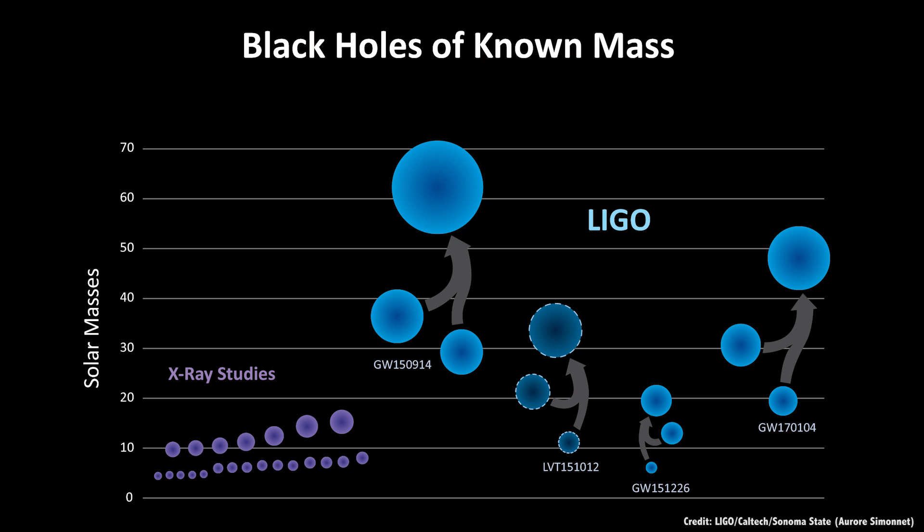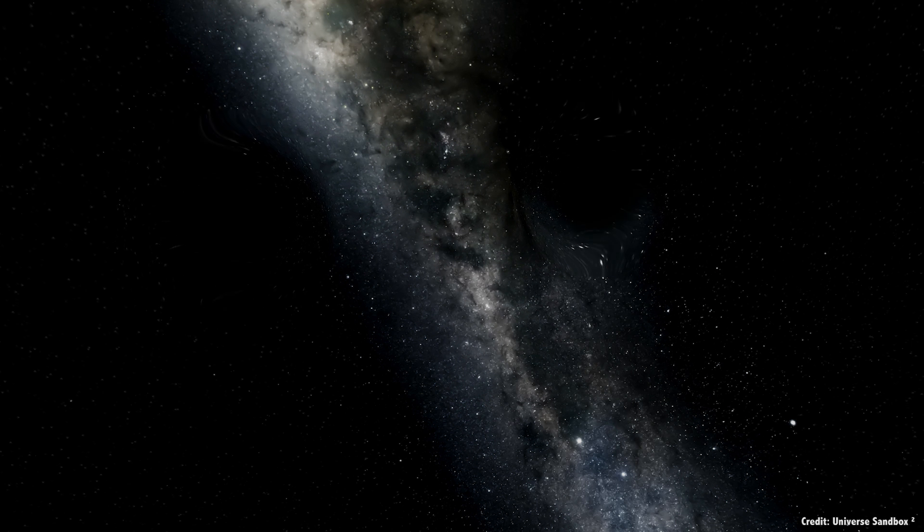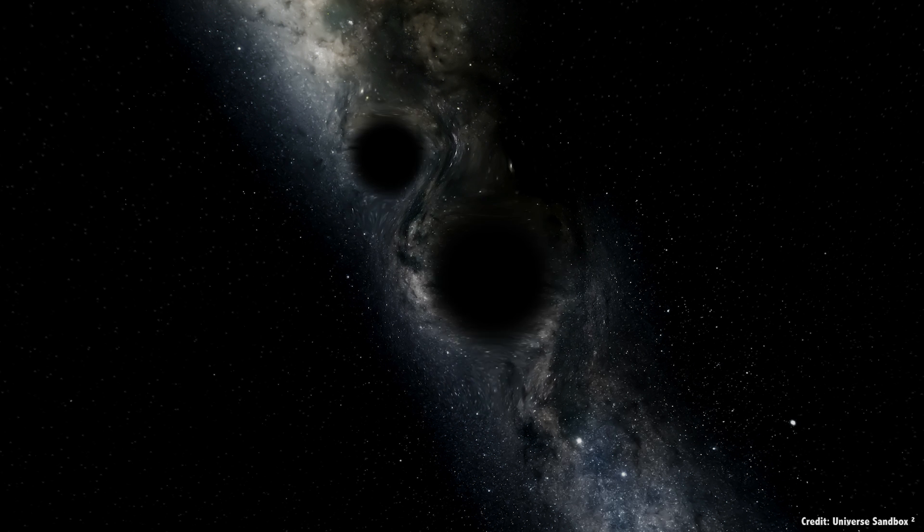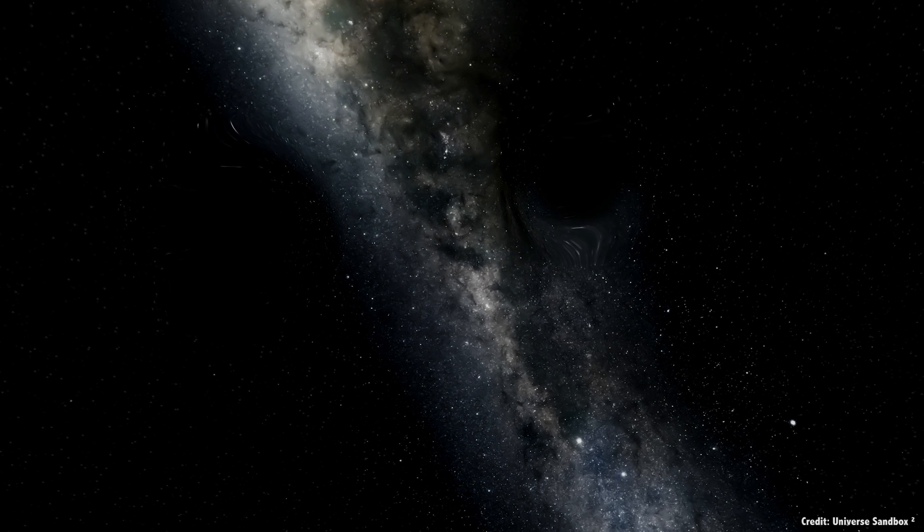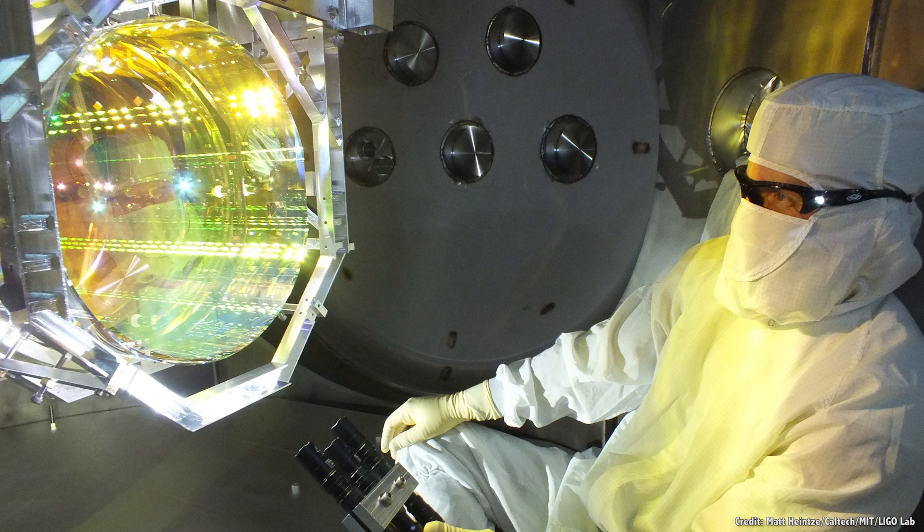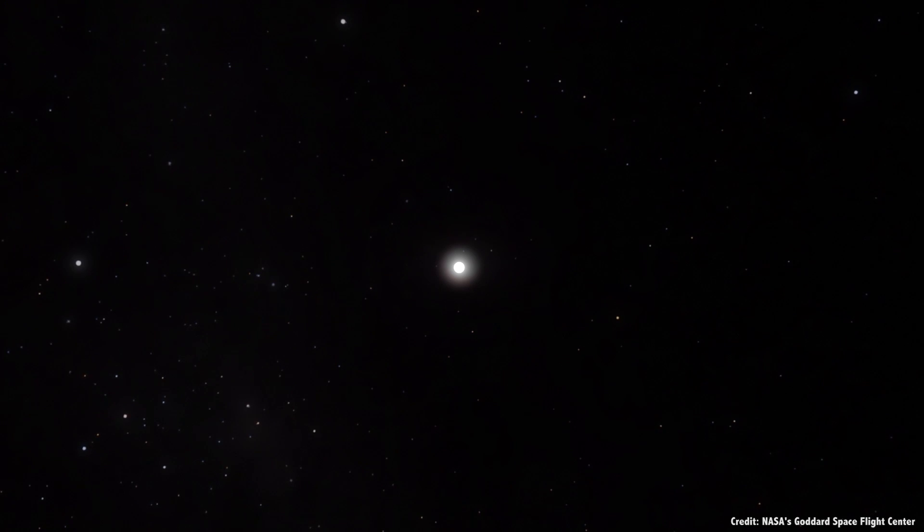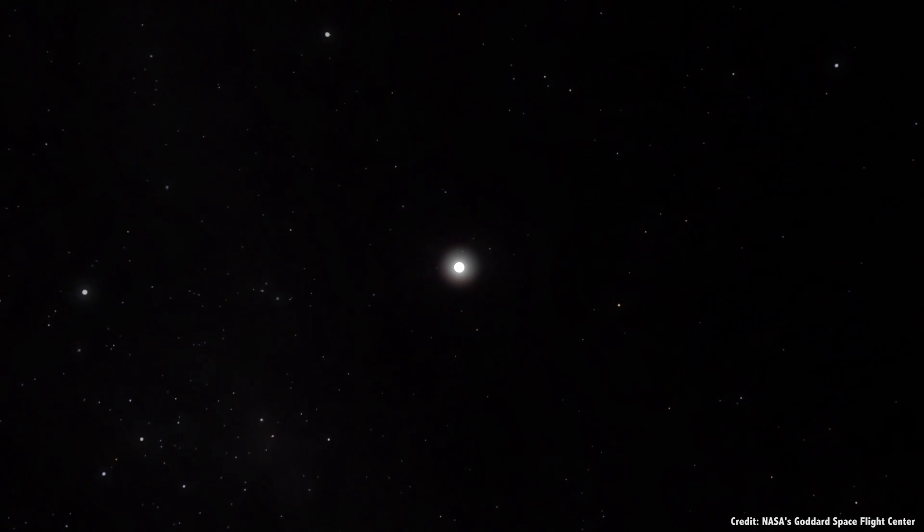This is why all the detections so far have been intermediate mass black holes, with dozens of times the mass of our Sun. As we can only detect them at the moment that they're merging together, when they're generating the most intense gravitational waves. If we can boost the sensitivity of our gravitational wave detectors, we should be able to spot mergers of less and more massive black holes. But merging isn't the only thing they do.